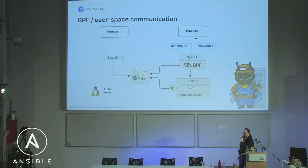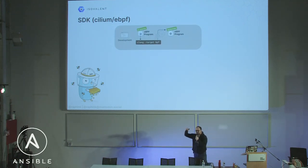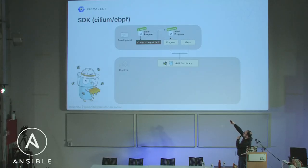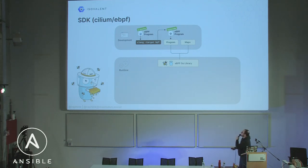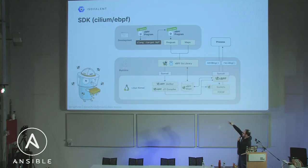Very often there are SDKs used for this. Usually a program is generated, compiled to bytecode, and then you use an SDK. In Cilium, we use the Go SDK. This SDK takes the bytecode program, along with the maps and events it's supposed to attach to, and does the whole plumbing in the kernel — the verifying, JIT compiling, and so on — and attaches it to the events for you.